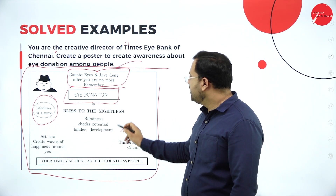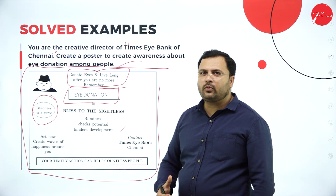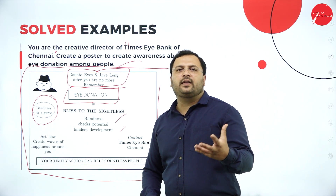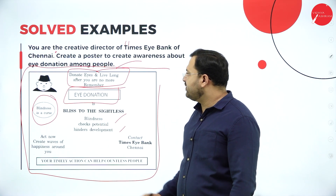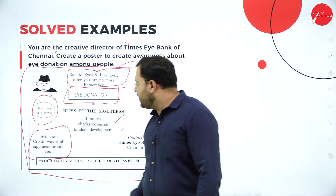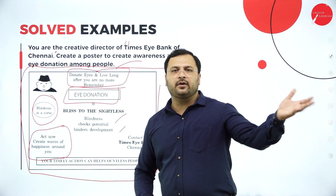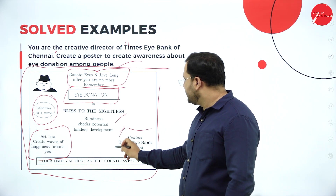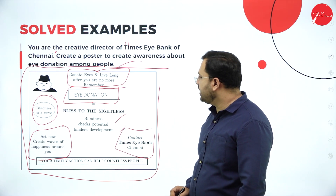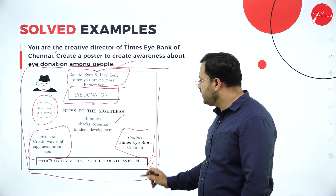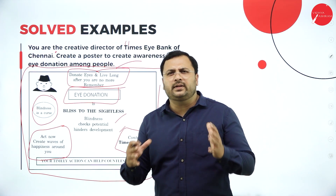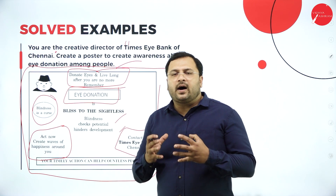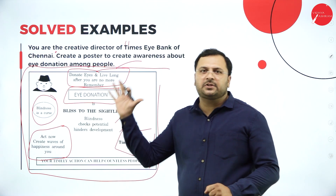'Blindness checks potential. Hinders development.' — What is the effect of blindness? It checks potential; people cannot realize their potential and it hinders their development. 'Act now. Create waves of happiness around you.' When you are no more, let your body parts be the light for somebody's life. 'Contact the Times Eye Bank of Chennai. Your timely action can help countless people.' This is how you give all the relevant information in a poster so that when people look at it, they are attracted and the information reaches them.